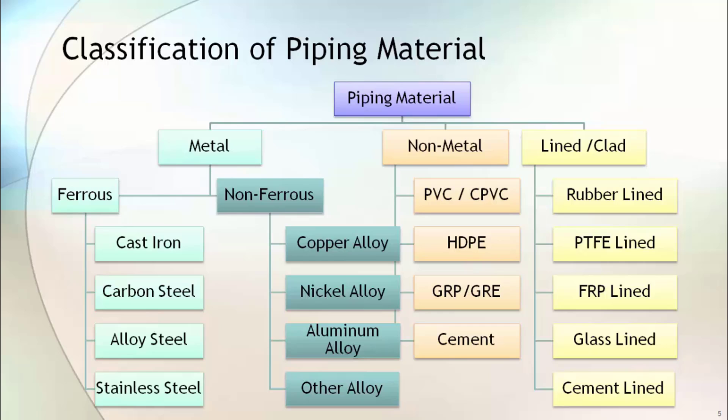Under the metal category, there are two types of material: ferrous and non-ferrous. Under the ferrous category, cast iron, carbon steel, alloy steel, and stainless steel are covered. Whereas in the case of non-ferrous, copper, nickel, aluminum, titanium, and zirconium are covered.